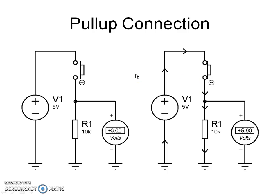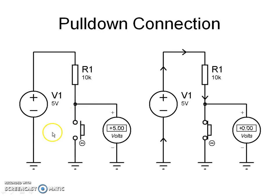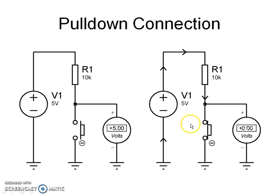Similarly, a sliding switch can be connected in pull-up. When one end of the push button is connected to ground and the other end is connected to +5V through a resistor, the push button is said to be connected in pull-down. In this case, the voltage across the push button is the output voltage. With the push button released, the voltage across the push button is +5V because the current flowing through the resistor is 0. When the push button is pressed, the voltage across the push button changes to 0V because of current flowing through the resistor and the low contact resistance of the push button. Similarly, a sliding switch can be connected in pull-down.